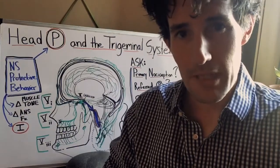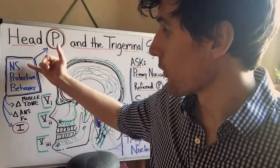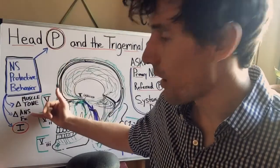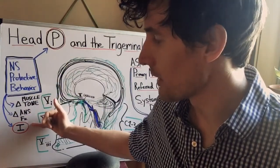It's not the only behavior that your nervous system engages in when it perceives threat. There are others, for example, changes in muscle tone, changes in autonomic behavior, changes in inflammatory behavior.